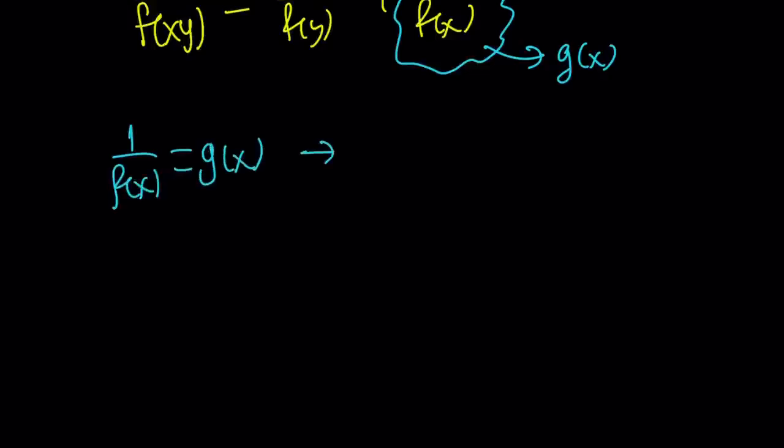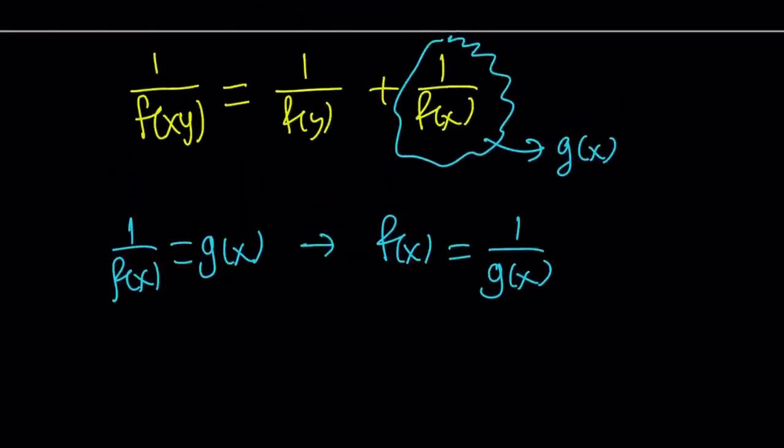So one over f of x equals g of x. And from here, we can also isolate f of x as one over g of x. Of course, they're not zero in this case. So that is really good, because first of all, it kind of simplifies this reciprocal thing, but also simplifies the whole thing.